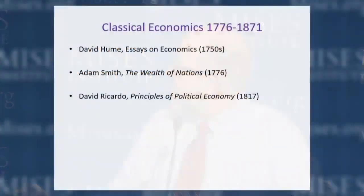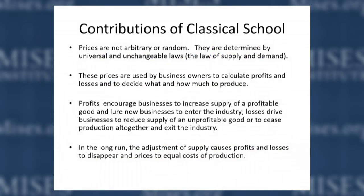When Menger wrote, the dominant school was the British classical school of economics. The three main figures were David Hume, Adam Smith, and David Ricardo, all British — Scottish and English. They were brilliant economists who said some things still true today. They pointed out that prices are not arbitrary or random; they're determined by the law of supply and demand — universal and unchangeable laws. That's certainly true. They also pointed out that prices are used by business decision makers to allocate resources, to decide how much and what to produce, and to calculate profits and losses.